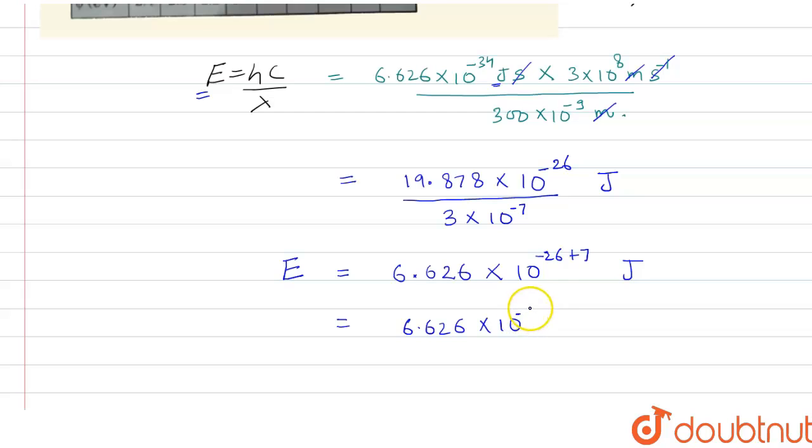This is in joule unit, and we have to calculate in electron volt. One electron volt is equal to 1.6 × 10^-19 joule. So one joule will be equal to 1 divided by 1.6 × 10^19 electron volt.